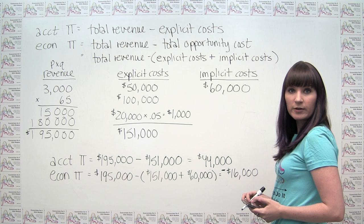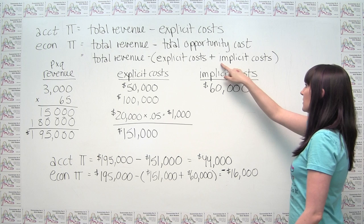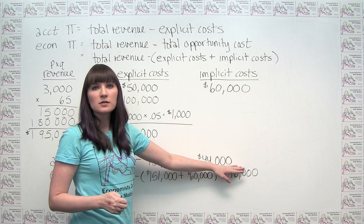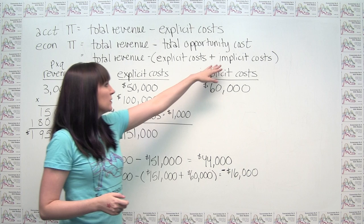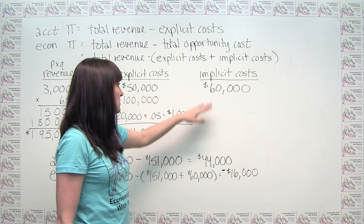Notice that the difference between accounting profit and economic profit is exactly the implicit cost. We could also calculate economic profit by taking accounting profit of $44,000 and subtracting the implicit cost of $60,000, which gives negative $16,000 — the same result.